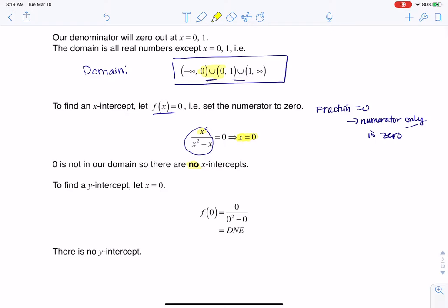Now for the y-intercept, you always let x equal zero. So I'm going to find f of zero. Keep in mind, f of x was x over x squared minus x. So when I plug zero in, I get zero over zero, which does not exist. There's no y-intercept either. So that's why I have no intercepts on this function.